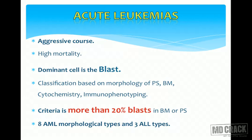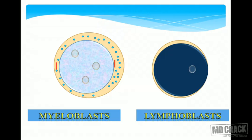The predominant cell in peripheral blood is the blast — you should see more than 20% either on peripheral smear or on bone marrow examination. Most of the time, cytochemistry and immunophenotyping help for proper and final confirmation of cases.